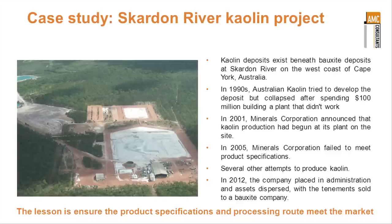So in 2001, another company called Minerals Corporation had taken over the operation and announced that it had begun production at the plant. But in 2005, it became clear that it had failed to meet product specifications as well. There have been several other attempts to produce kaolin. In 2012, the company was placed in administration, the assets dispersed, and the tenements have been sold. There's a company interested in the bauxite overlying the kaolin. The kaolin is almost now forgotten.